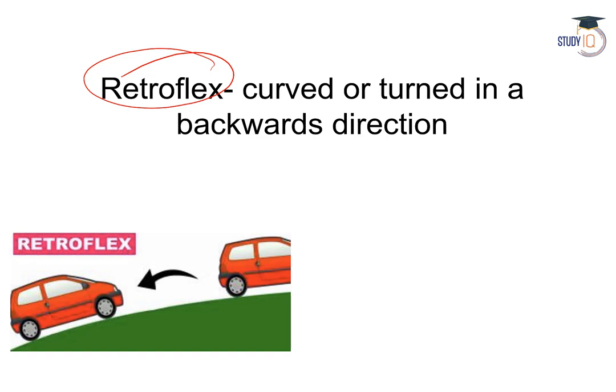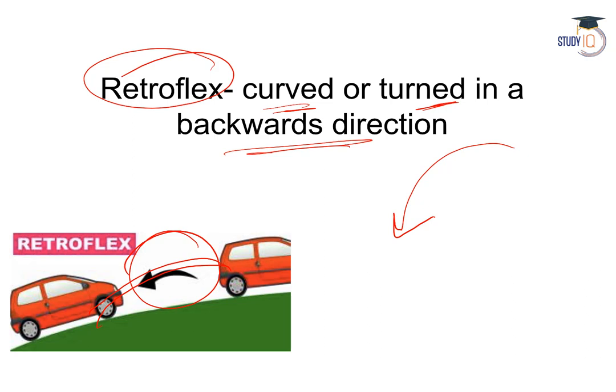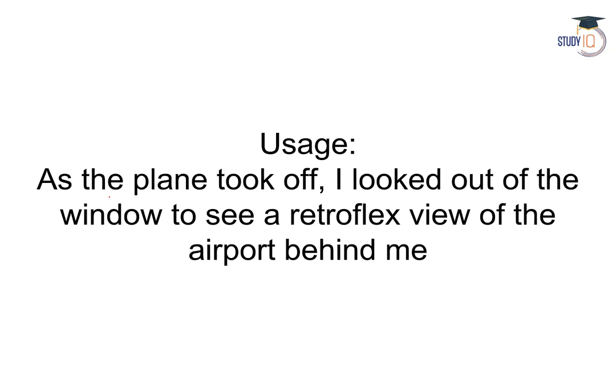Moving on to retroflex. Retroflex ka arth hota hai — curved or turned in a backwards direction. Two things to remember: it is curved, and it goes in a backward direction, not forward. Usage: As the plane took off, I looked outside the window to see the retroflex view of the airport behind me.